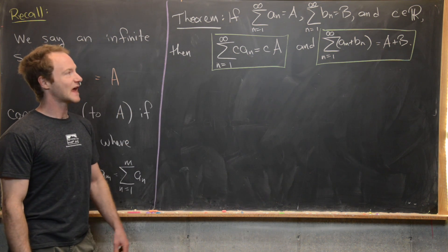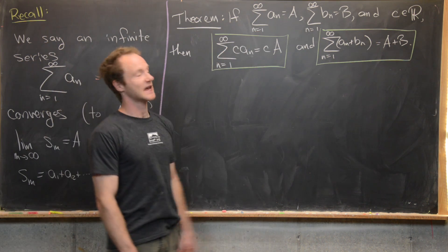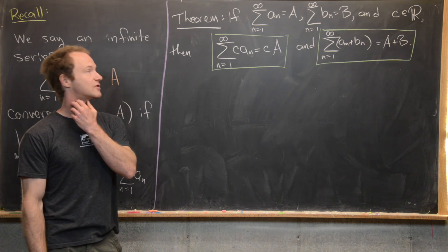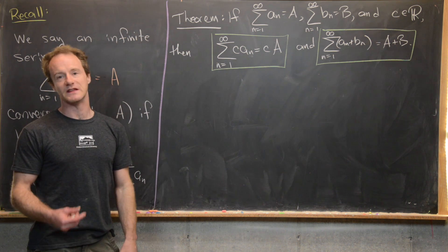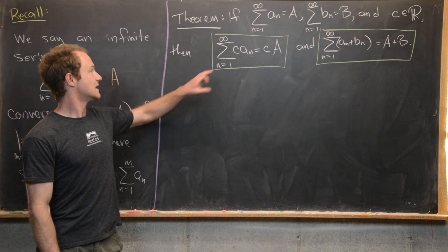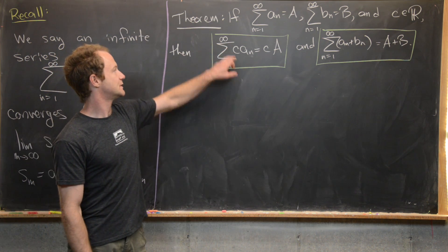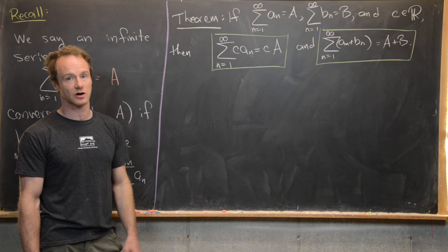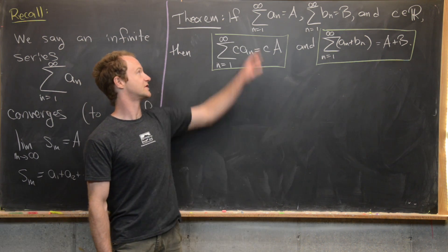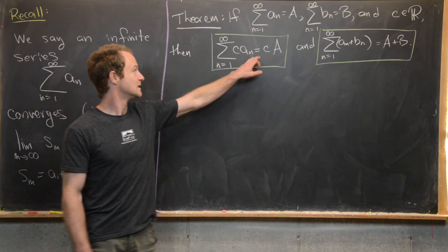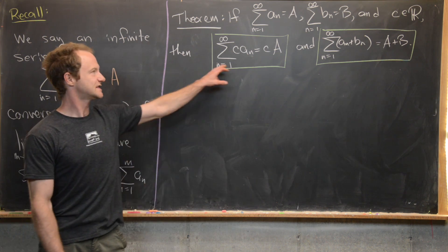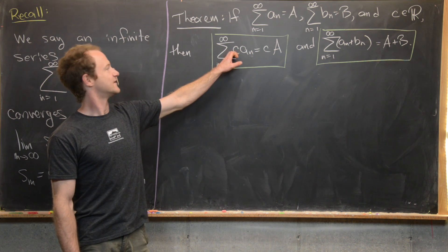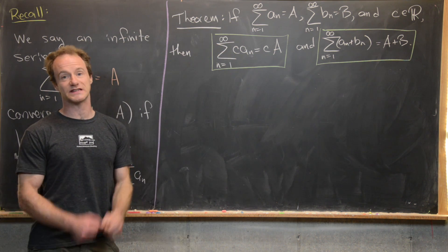Our first result is an algebraic property of infinite series. It says that if we have two convergent series — the series a sub n converges to a, and the series of terms b sub n converges to capital B — and c is a real number, then the sum as n goes from one to infinity of c times a sub n equals c times a. So this is some sort of infinite distributive rule; we factored this c out of the infinite sum.